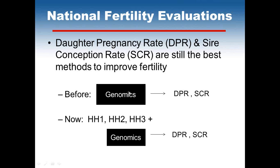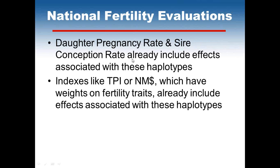Prior to information on these haplotypes being available, genomics combined with phenotypes and pedigrees provided daughter pregnancy rate and sperm conception rate estimates. Think of the haplotypes as taking the genomics box and making it a little bit smaller — now we have some information on Haplotypes 1, 2, and 3 that explain just a portion of what the genomics box was. Everything still works to estimate daughter pregnancy rate and sperm conception rate as before. The daughter pregnancy rate and sperm conception rates do include the effects associated with these haplotypes. Indexes like TPI or net merit dollars, which have weights on fertility traits, also include the effects associated with these haplotypes.